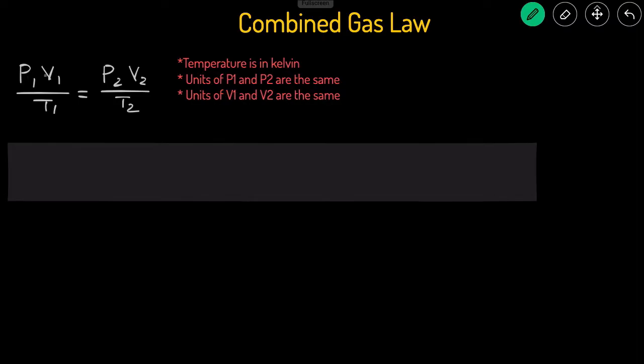The equation for the combined gas law is P1 V1 divided by T1 equals P2 V2 divided by T2. P is the pressure, V is the volume, and T is the temperature. You use the combined gas law when the pressure, the volume, and the temperature are all changing at the same time.